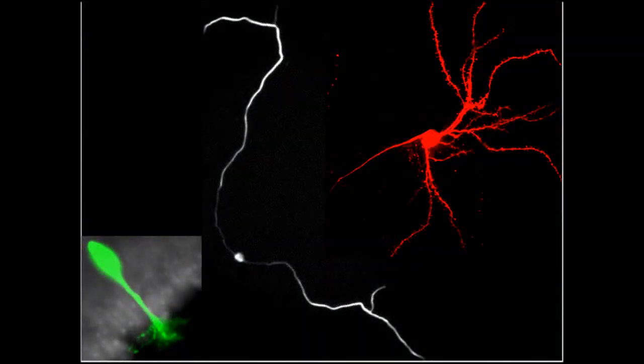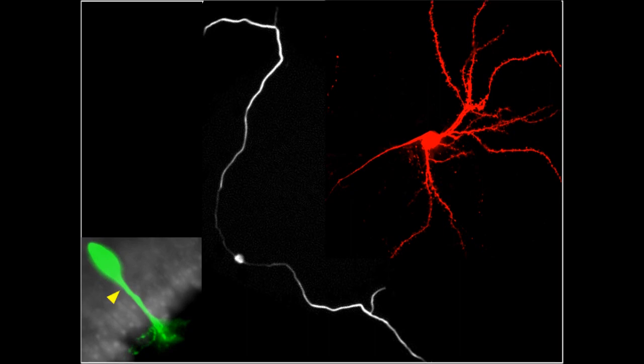In this study, we asked how neurons determine how many neurites to extend. Neurite number varies widely in neurons with different functions, with some extending one dendrite, others becoming bipolar, and others elaborating multiple processes.